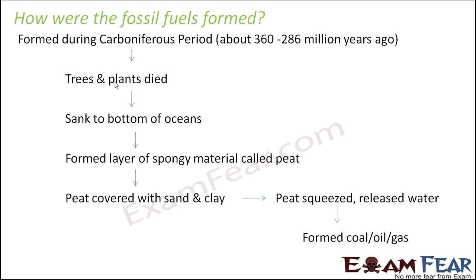Coal was primarily formed from the remains of dead plants, and petroleum was formed from dead remains of animals. This transformation of dead plants or animals into coal or petroleum did not happen overnight — it took millions of years. That is why we say these are exhaustible resources: if we exhaust them so soon, it will become very difficult to form them again.